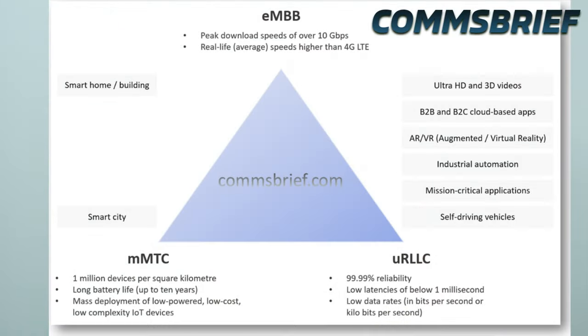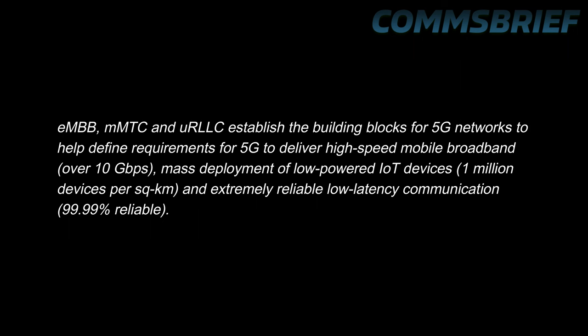eMBB is all about high-speed mobile broadband. mMTC is all about IoT devices at mass scale. URLLC is about highly reliable communication services where low latencies are required. To summarize: eMBB, mMTC, and URLLC establish the building blocks for 5G networks — defining requirements to deliver high-speed mobile broadband over 10 Gbps, mass deployment of low-powered IoT devices at 1 million devices per kilometer squared, and extremely reliable low-latency communication at 99.99% reliability.